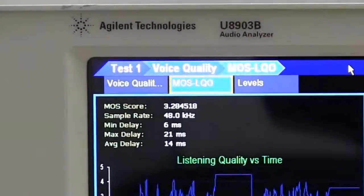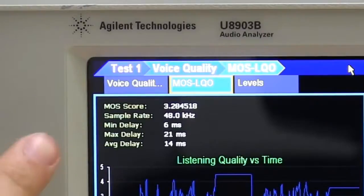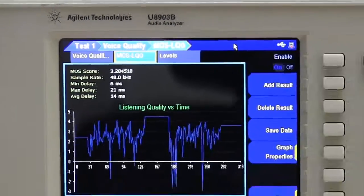So, as you can see here, this is the Mean Opinion Score, MOS score, which is rated at 3.28. It is considered very good.